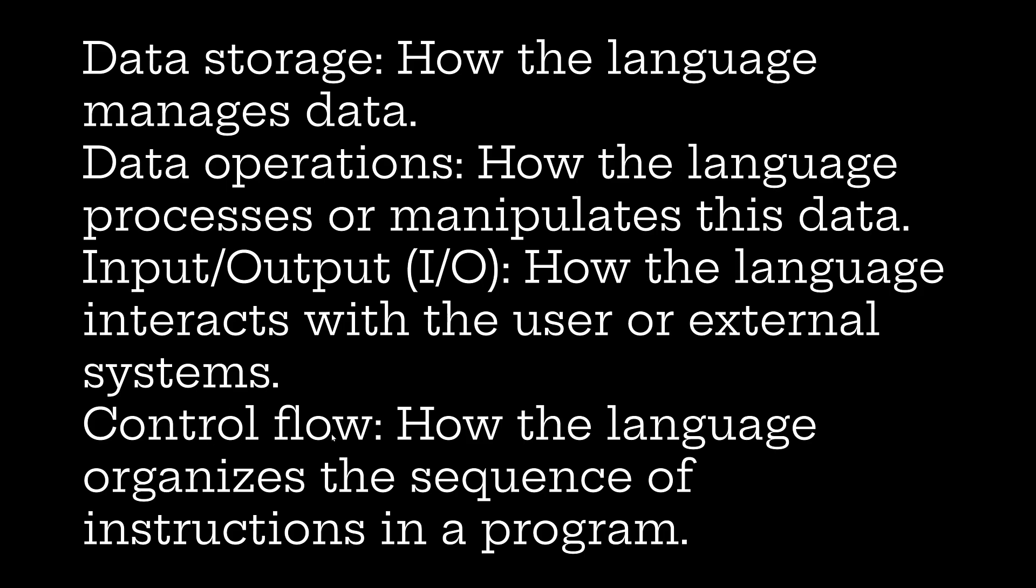And the last one is control flow. How the language organizes the sequence of instructions in a program. These are the four important aspects that the programming language should be considered. How the data is stored, how the data is manipulated, how the language interacts with the user input and output, and how the language organizes the sequence of instructions in a program.